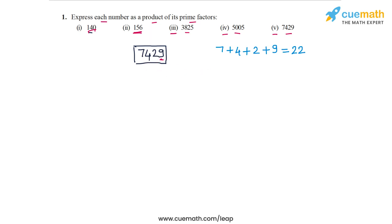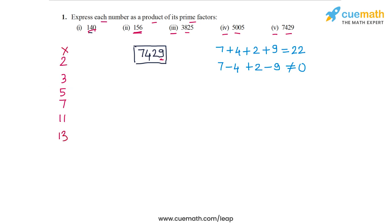7429 is also not divisible by 11 — the alternating digit sum 7 − 4 + 2 − 9 is not equal to 0. It is also not divisible by 13. So 7429 is not divisible by 2, 3, 5, 7, 11, or 13. However, we can check that 7429 is perfectly divisible by the next prime number, 17. Taking out a factor of 17 leaves us with 437.